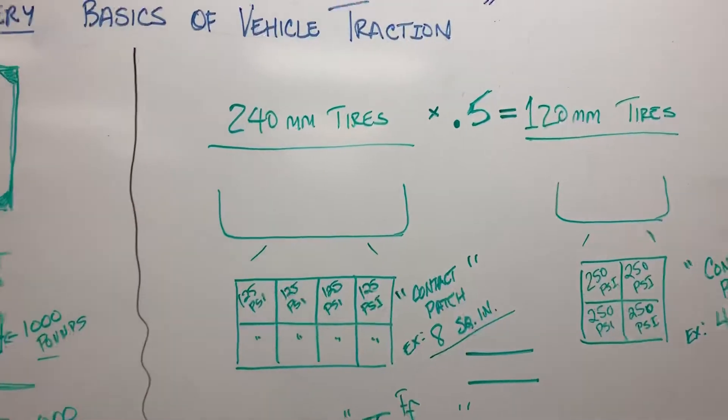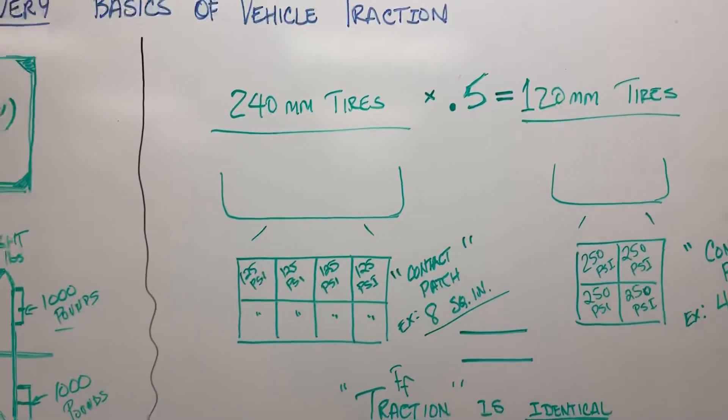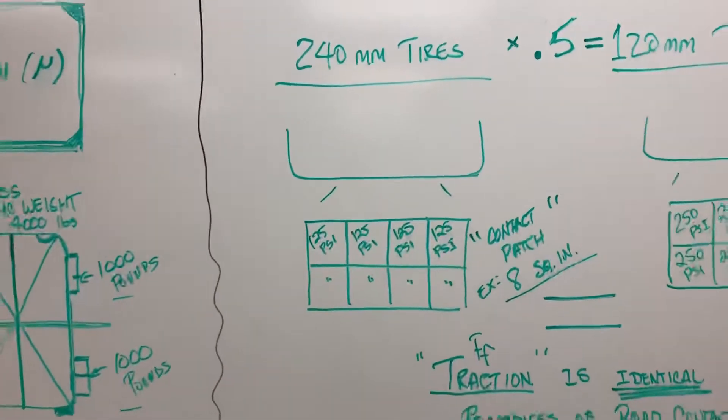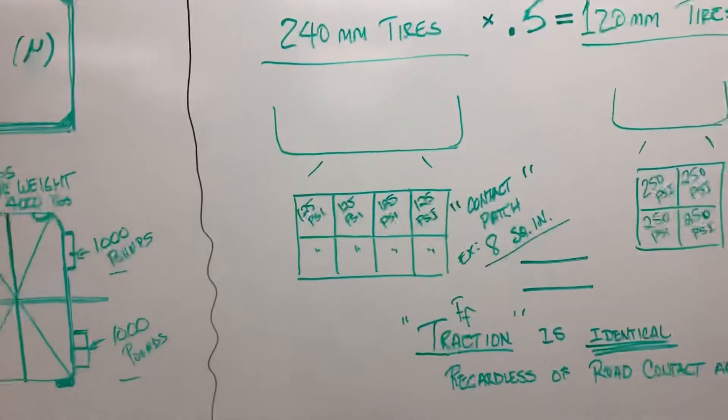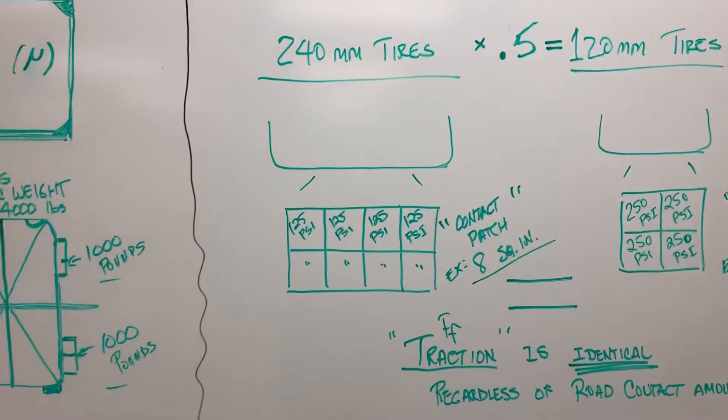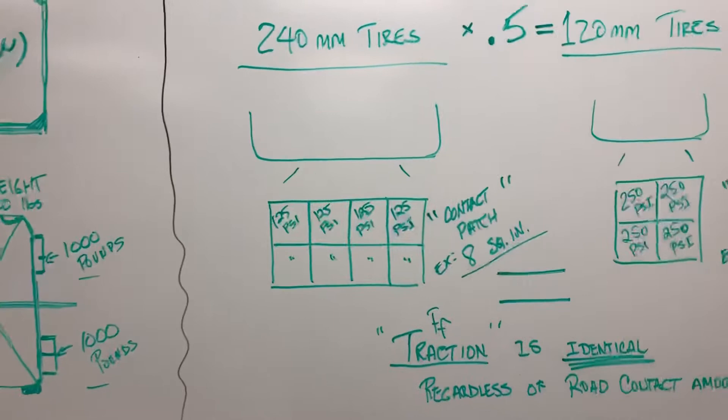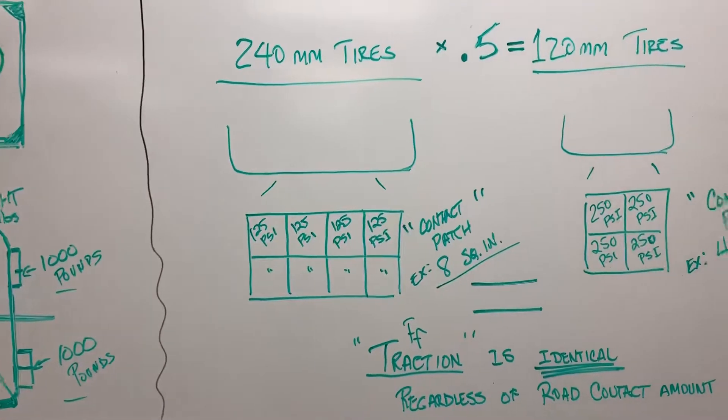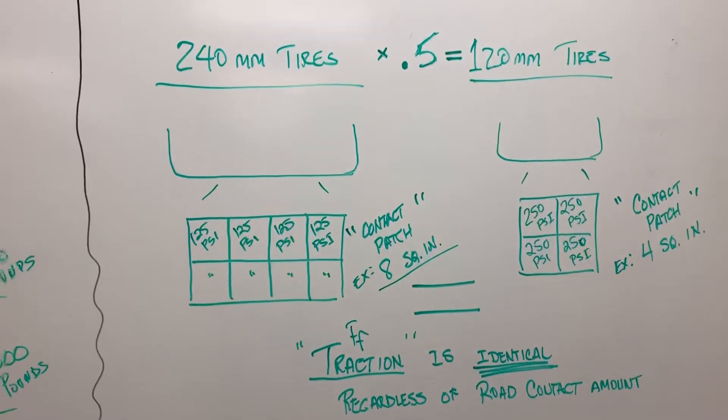Secondarily, there's a bunch of other terrible things that happen when your tires get wider. One of which is you're more likely to hydroplane because you've got more surface, you can't move water out of the way as quickly. Same in the snow, you're more likely to coast along and slide along in the snow because you can't move the snow out of the way as quickly.